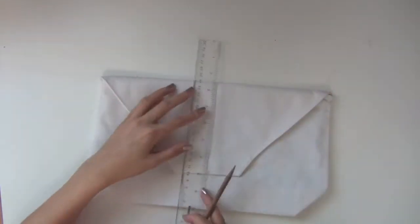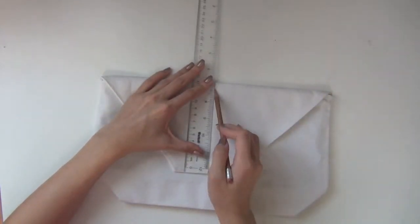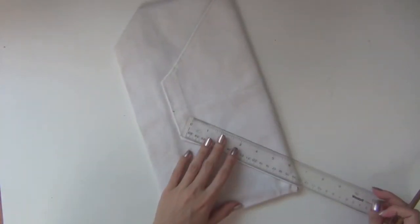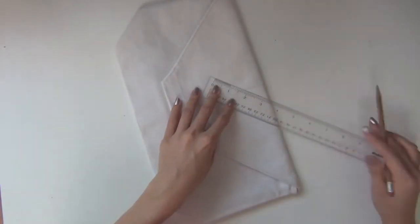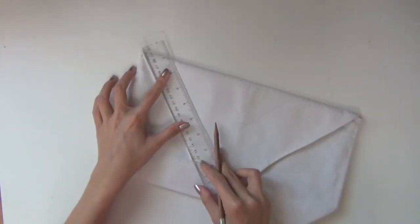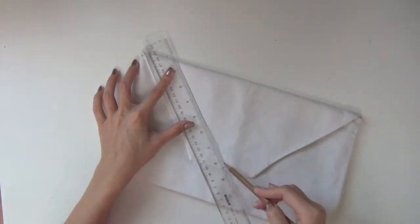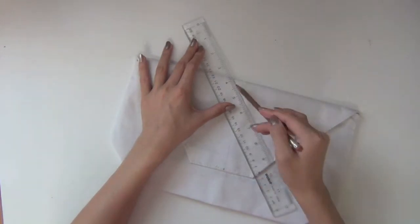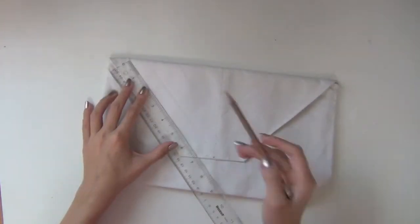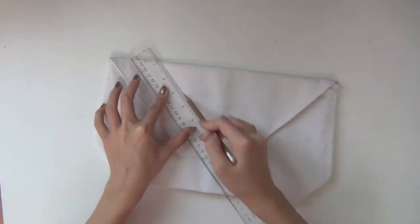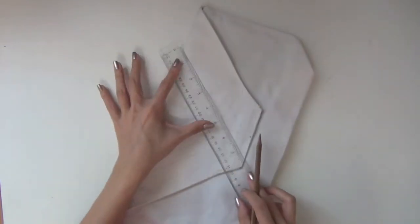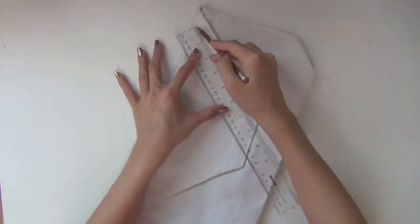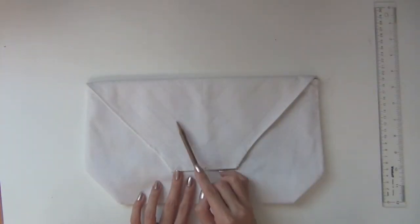But we're going to take it up another level by painting on it because a white clutch is maybe kind of boring. So I'm going to draw some chevron design on the top flap. And here you can see I divide it in half and then use the ruler as the divider for these chevron shapes. And I'm going with the shape of the envelope already.